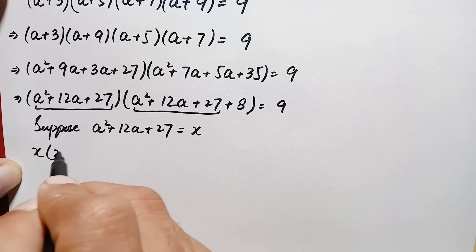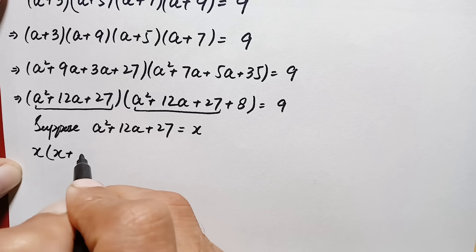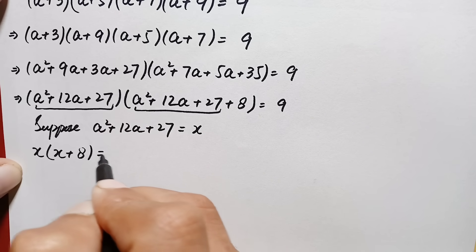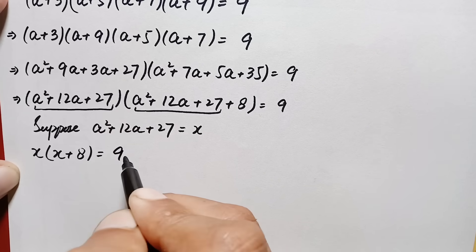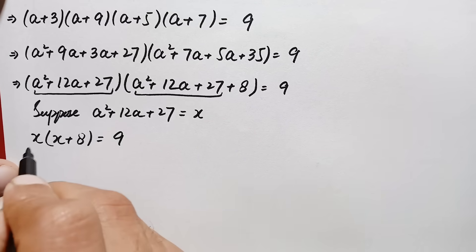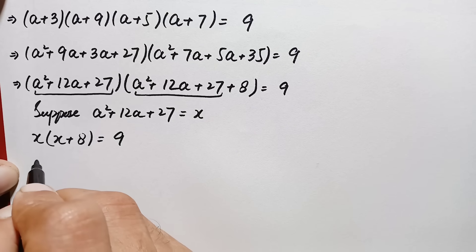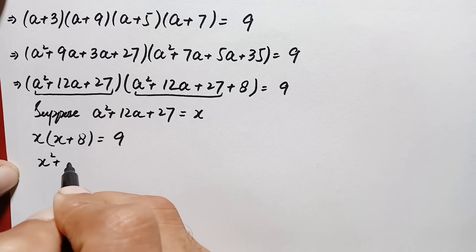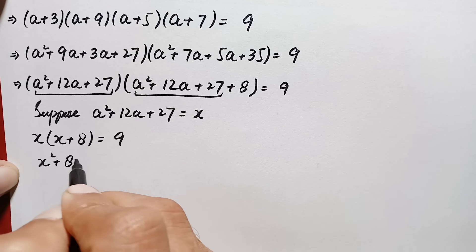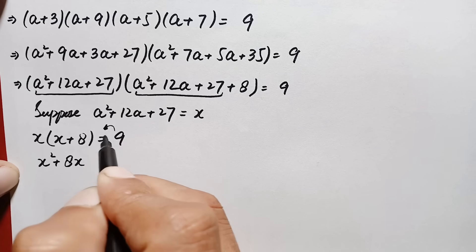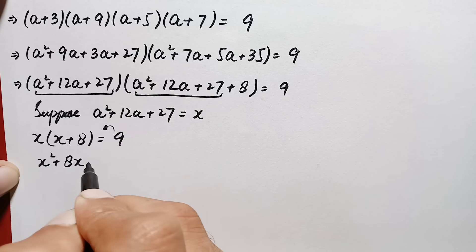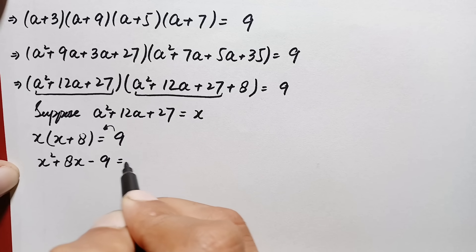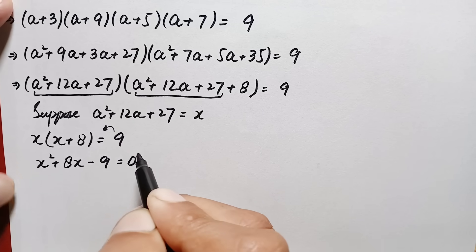Let x = a²+12a+27. The equation then becomes x(x+8) = 9, which expands to x²+8x = 9. Taking 9 to the left-hand side gives x²+8x−9 = 0.